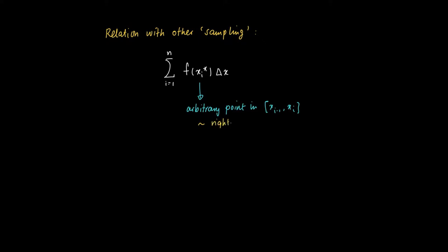In the right endpoint treatment, we've chosen xi star to be xi, which is the right endpoint in this interval. The left endpoint selected xi star equals xi minus 1, and the midpoint takes the average: xi star equals one half times xi minus 1 plus one half times xi.